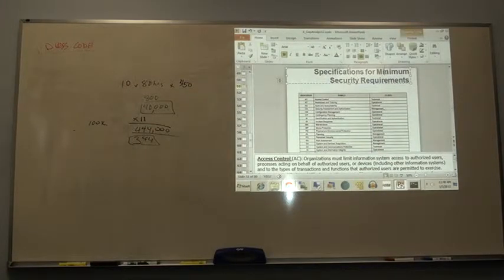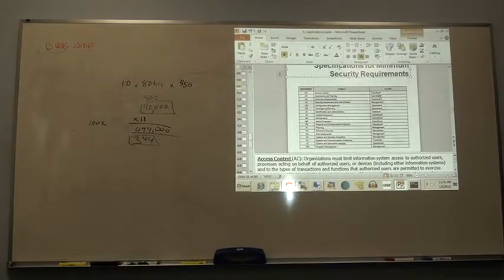Your minimum security requirements, your categories here, your class, and then you have your family, or the family that it belongs to, and then the two-letter identifier. Is this 853? Yes. Would be Appendix F, and it's 853. Actually, that's Appendix D. Appendix F would be the details of that. But notice that there are management, operational, and technical, that's the class, or the family. Family is just the name.